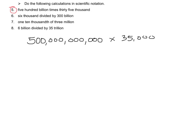Let's look at number five: 500 billion times 35,000. That's a lot of zeros. So first we're going to write this in scientific notation. 500 billion is 5 times 10 to the 11th — counting 1, 2, 3, 4, 5, 6, 7, 8, 9, 10, 11. And you're multiplying that by 3.5 times 10 to the 4th, the same way, just counting over.